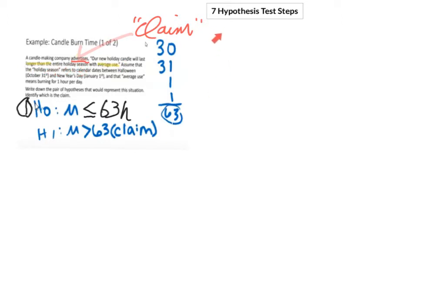Writing the hypotheses is the first of seven steps for performing a hypothesis test. The null hypothesis is that there is no effect, and the alternate hypothesis is that there is an effect. The null and the alternate hypotheses are complements — if the null is true then the alternate must be false and vice versa. We assume the null hypothesis is true and are trying to reject it using evidence from a sample statistic obtained from a single sample of size n. If that sample statistic is unusual under the null, we reject the null; otherwise we fail to reject. Those are the only two allowable decisions.